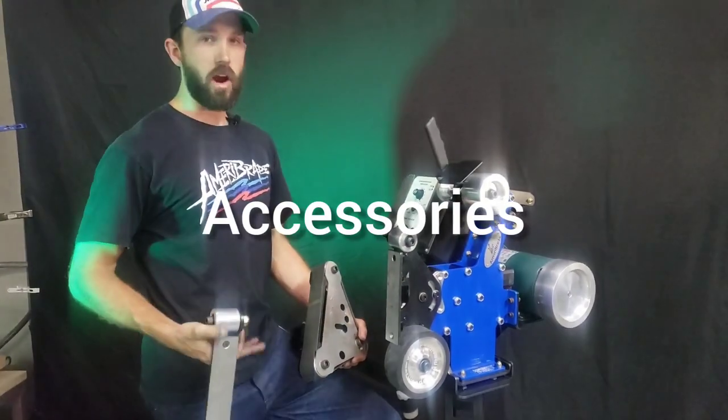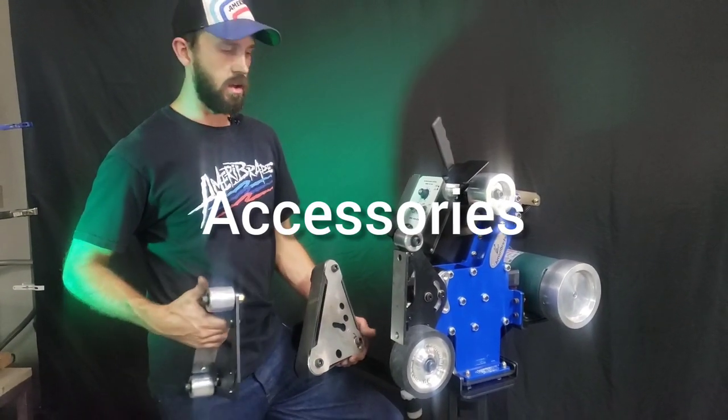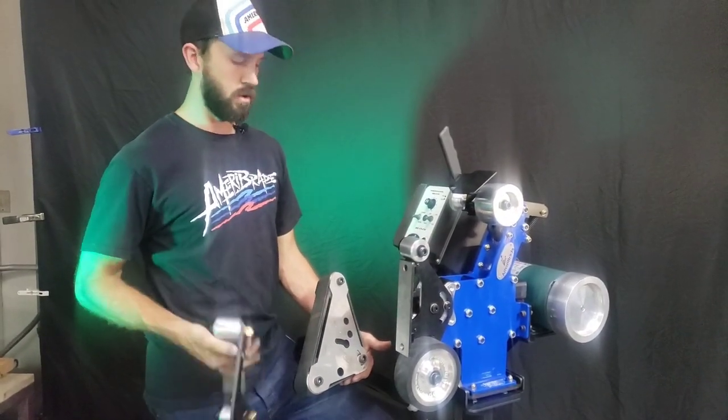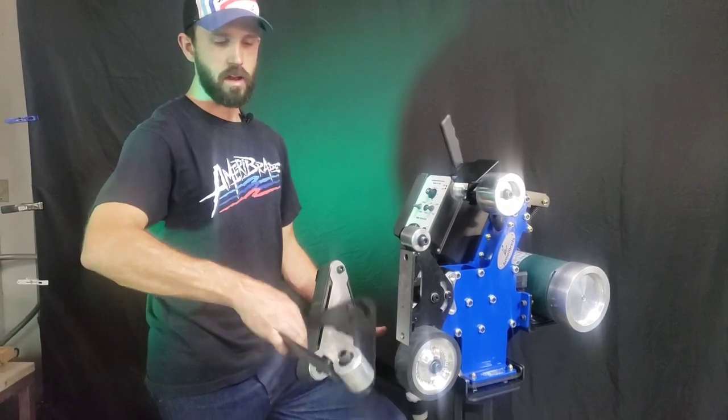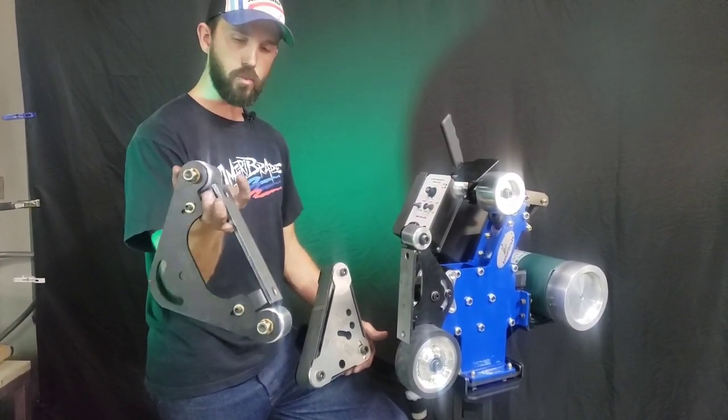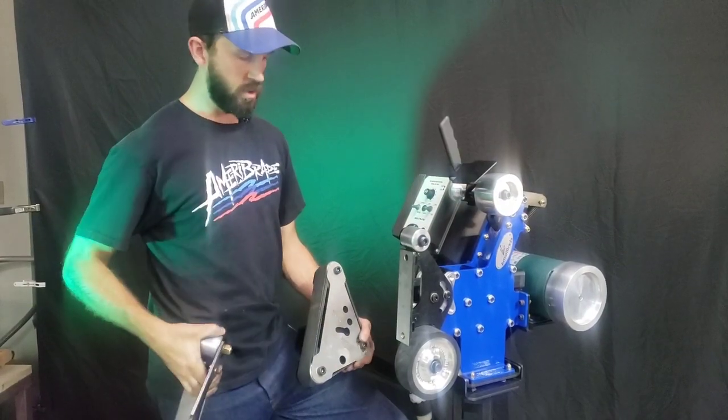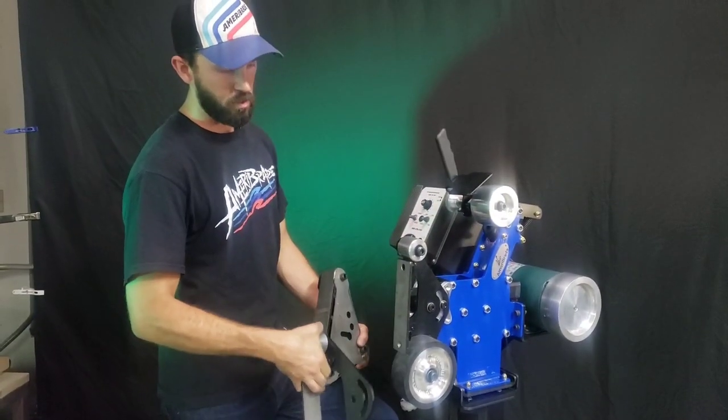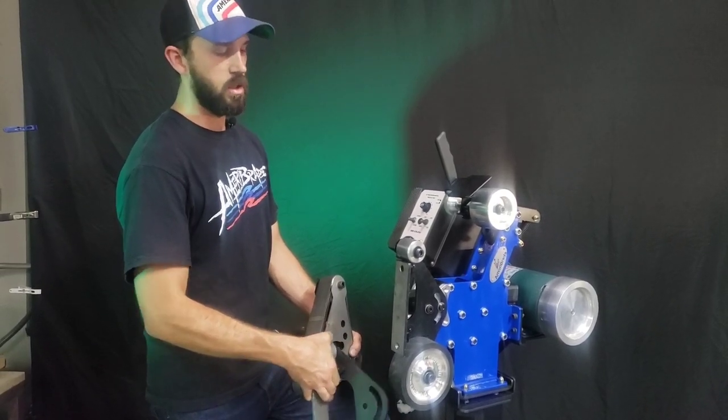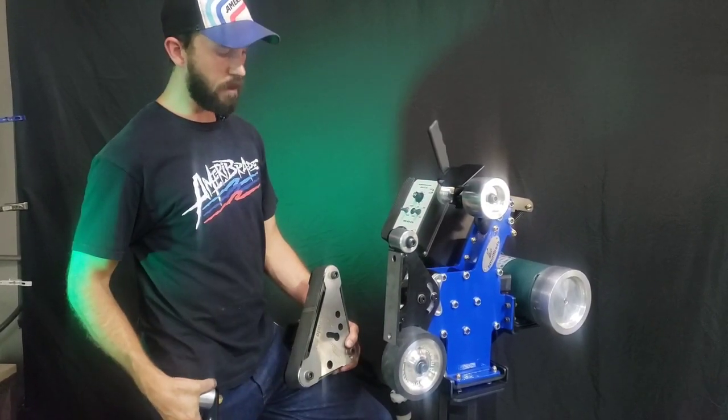So let's talk about the different grinding accessories that we've got. There's three different types of platens we offer. Standard tilting platen right here. It's got two 2-inch aluminum wheels on top and bottom. We've got the combo platen, which can come with a 2-inch, a 4-inch, or a 6-inch rubber wheel on the bottom, and it's got the same 2-inch aluminum wheel on top.